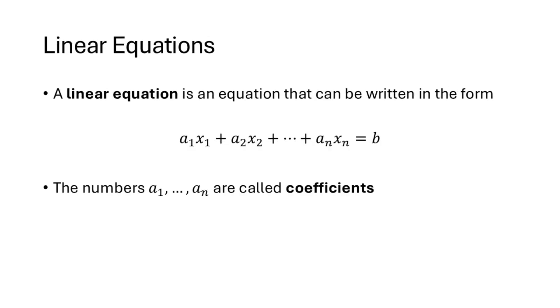First let's look at the definition of a linear equation. This is an equation that can be written in the form a1x1 plus a2x2 plus and so on through anxn equals b. So the x's are the variables, and the numbers a1, a2, and so on are called the coefficients.